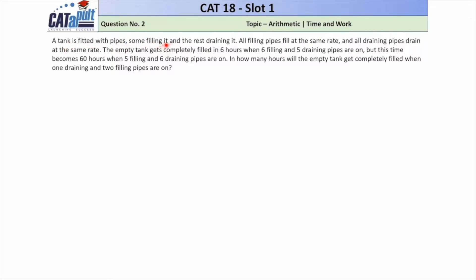A tank is fitted with pipes — some filling it and the rest draining it. All filling pipes fill at the same rate, and all draining pipes drain at the same rate, but the rates differ between the two types. The empty tank gets completely filled in six hours when six filling and five draining pipes are on, but this time becomes 60 hours when five filling and six draining pipes are on. In how many hours will the empty tank get completely filled when one draining and two filling pipes are on?